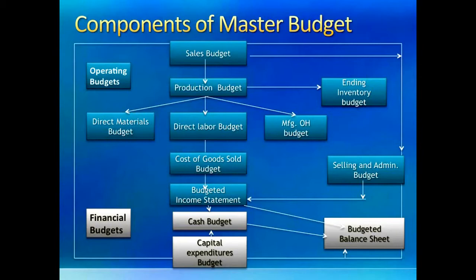Once we are done with all the budgets relating to manufacturing costs, we can prepare a selling and administrative cost budget using the sales numbers. After all expenses are taken care of, we are ready to prepare the budgeted income statement. After the income statement comes the cash budget, which shows the details of where cash will come from and when, and where it will be used during the budget period. The cash budget is influenced by all types of operating budgets in the company and also by the capital expenditure budget. The last step is to prepare a budgeted balance sheet using almost all of the budgets prepared above.